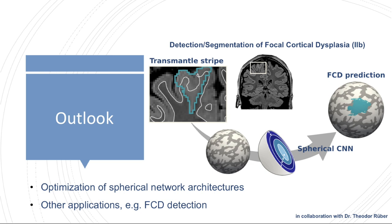In addition, we are also exploring other applications of spherical CNNs, which mostly includes signals that are inherently connected to the surface. One example is the detection of focal cortical dysplasias, which are important in epilepsy and are characterized by a transmantle stripe that protrudes into the white matter, as well as a blurring of the gray matter–white matter border in the FLAIR image. The idea is to sample thickness as well as intensity information at different cortical depths, which can then be used as a multimodal input to a spherical CNN to segment and detect the FCDs.